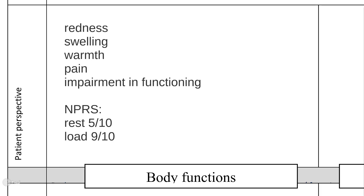The body functions section should definitely include whether there are any signs of inflammation — that are redness, swelling, warmth, pain, and impairment in functioning. The level of pain may be rated according to a numeric pain rating scale, the so-called NPRS. The patient gives a subjective rating of pain intensity on a scale from 0 to 10: 0 means no pain at all, whereas 10 indicates severe pain.